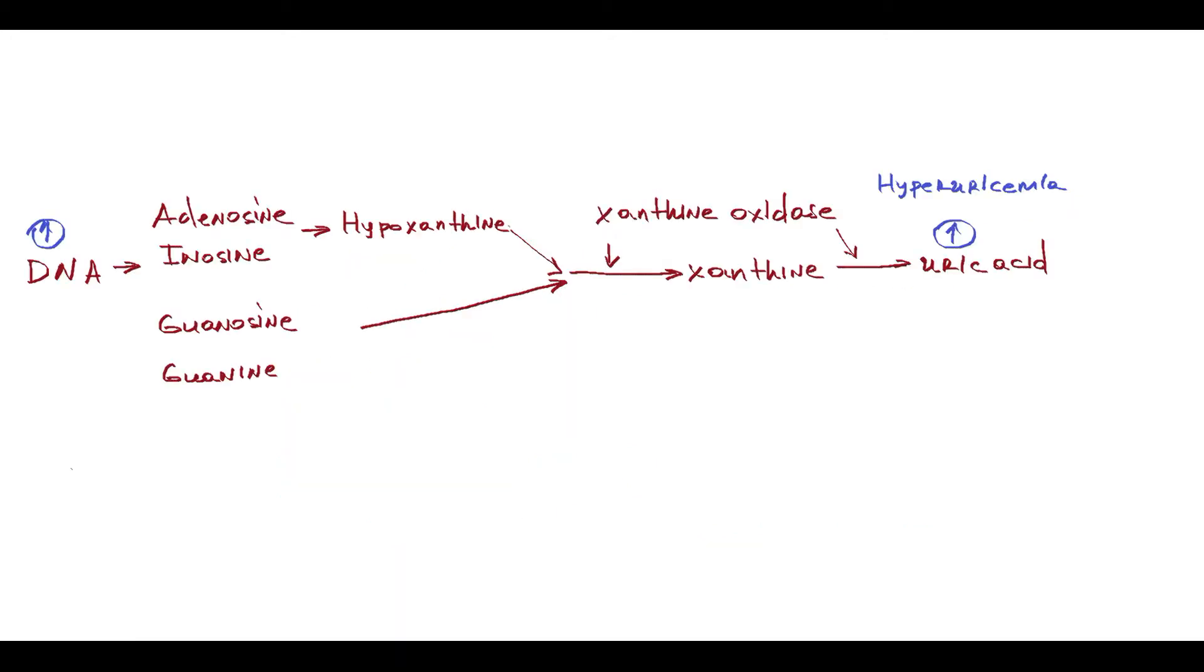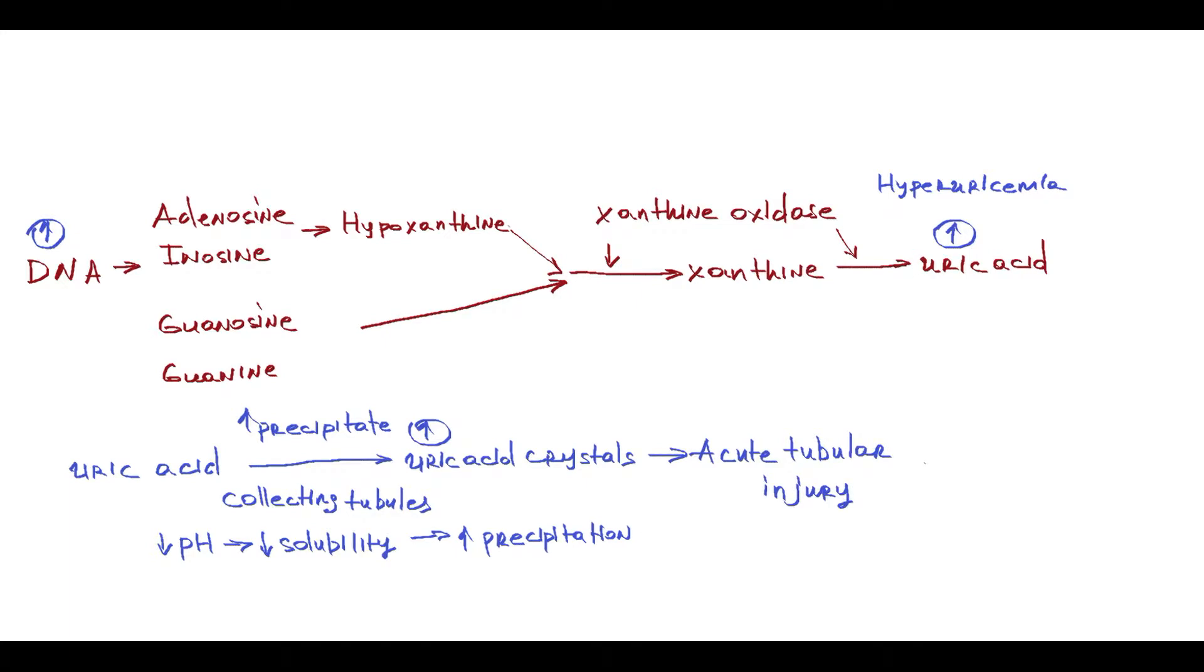The problem with uric acid is that it precipitates in renal tubules with uric acid crystal formation. This uric acid crystal deposition occurs predominantly in collecting tubules because it's the site of low pH. In acid environment, uric acid becomes less soluble, so solubility decreases, thereby its precipitation increases. This leads to increased crystal formation. These uric acid crystals cause diffuse acute tubular injury accompanied by inflammation and obstruction of renal tubules.